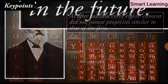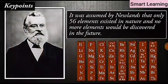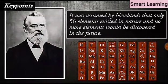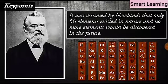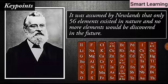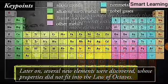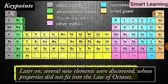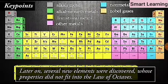It was assumed by Newlands that only 56 elements existed in nature and no more elements would be discovered in the future. But later on, several new elements were discovered whose properties did not fit into the law of octaves.